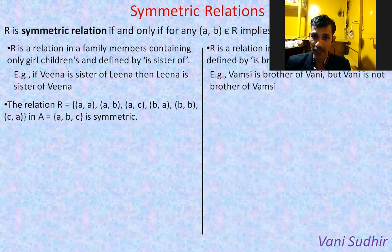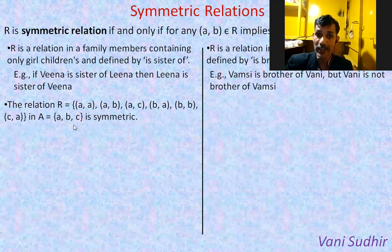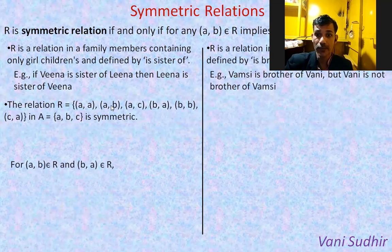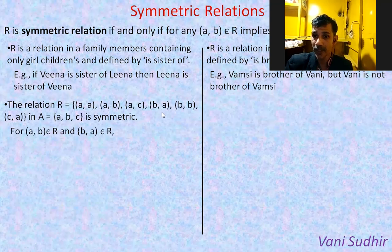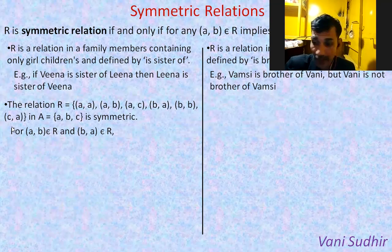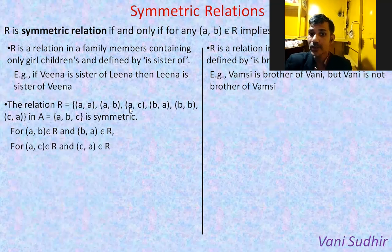Suppose we take some ordered pairs. Here R is defined on set {A, B, C}. We will check if this is symmetric or not. If you take the ordered pair (A, B), then (B, A) is also there in the relation. Next, (C, A) is there, and (A, C) is also there. Therefore this is a symmetric relation.